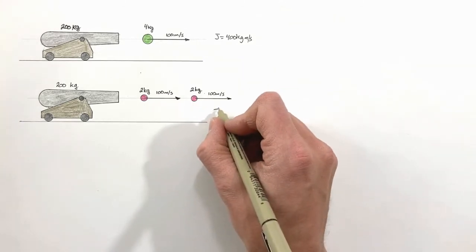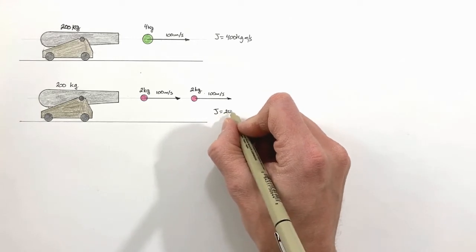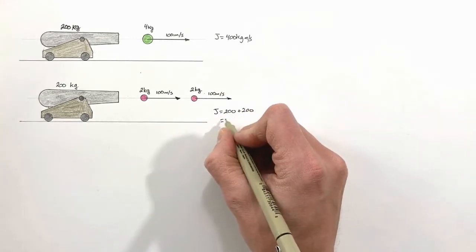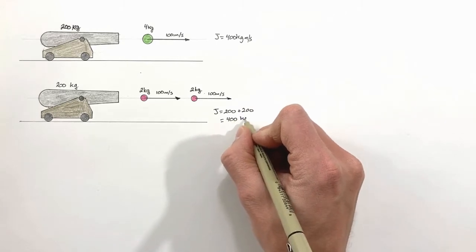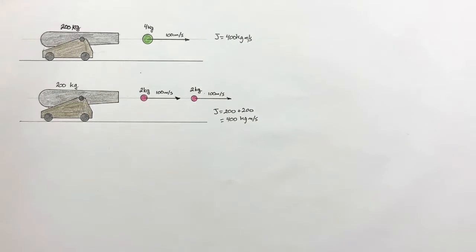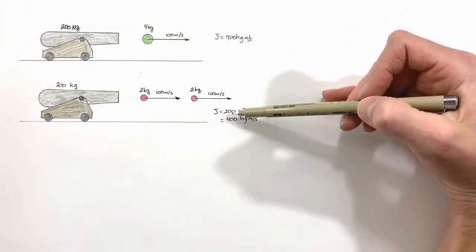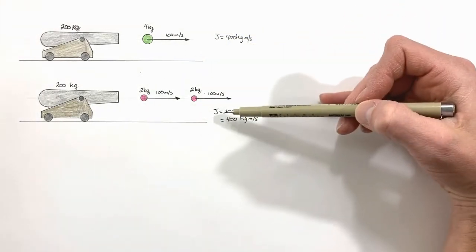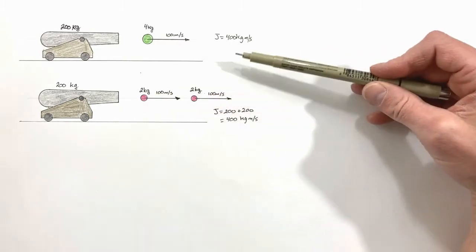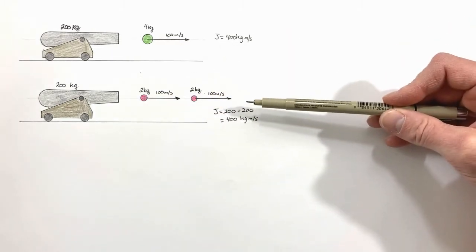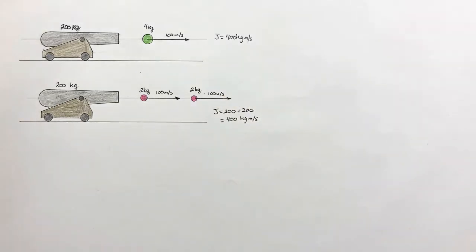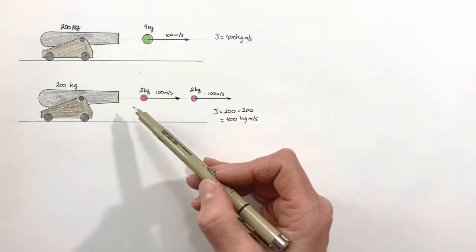The total impulse in this case is 200 plus 200, that is 400 kilogram meters per second of impulse given to the cannonballs. So the first takeaway is: even though we cut up the cannonball into two separate pieces, there's still the same total impulse on the cannonballs.